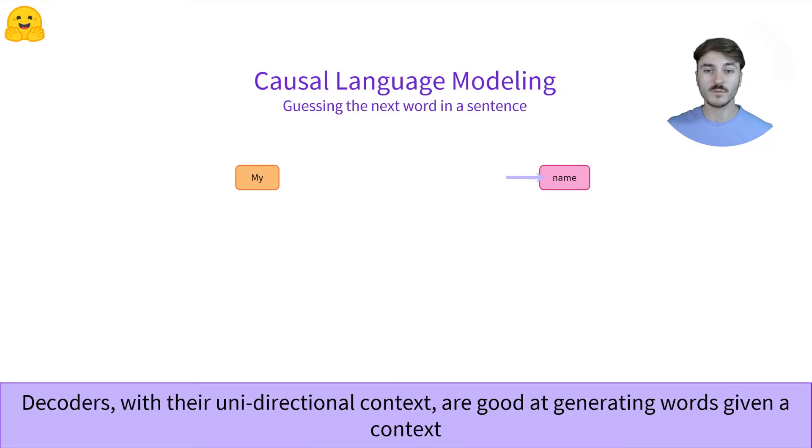We apply a small transformation to that vector so that it maps to all the words known by the model, which is a mapping that we'll see later, called a language modeling head. We identify that the model believes that the most probable following word is name.